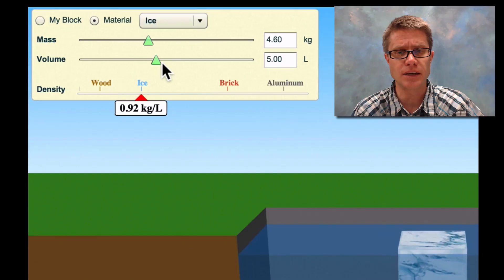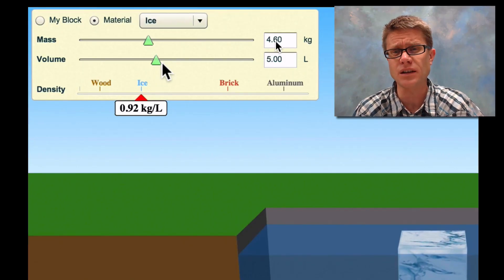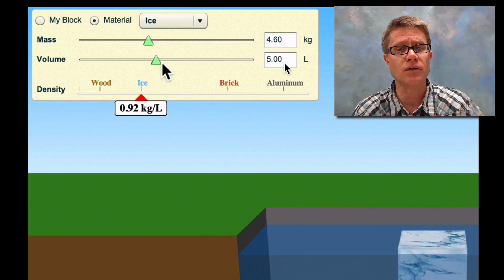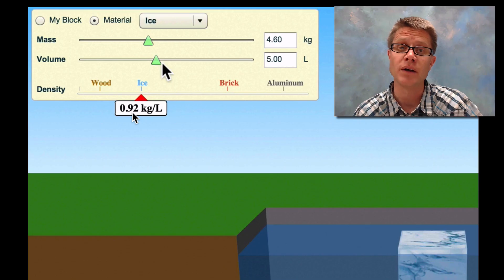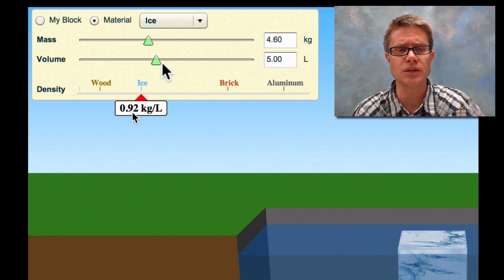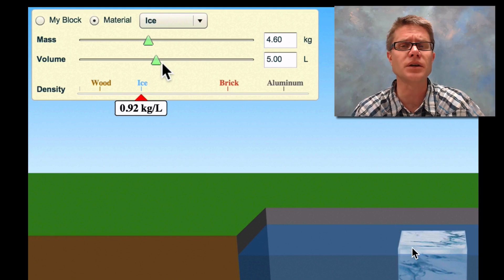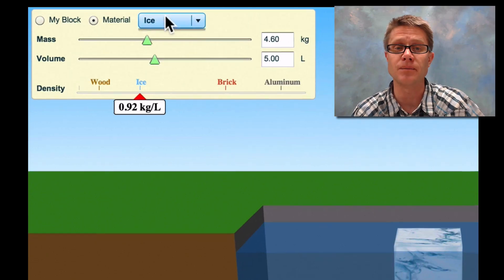Now let's switch that to ice. If we look at ice, what is our mass? The mass is 4.6 kilograms. What is our volume? It's 5 liters. So you can see that the density is 0.92. Now it's approaching 1. And what has a density of 1? That's going to be the water itself. Since it's less dense than the water, you can see the ice is floating. It's not floating as high in the water as the wood and styrofoam did, but it still is floating.